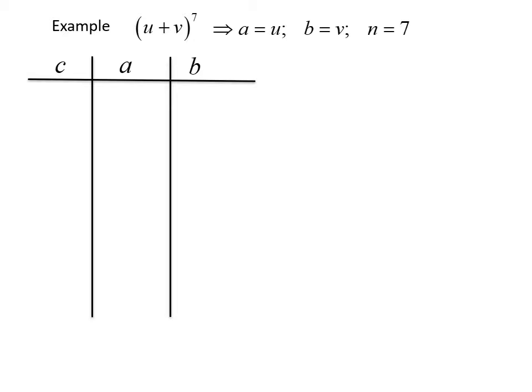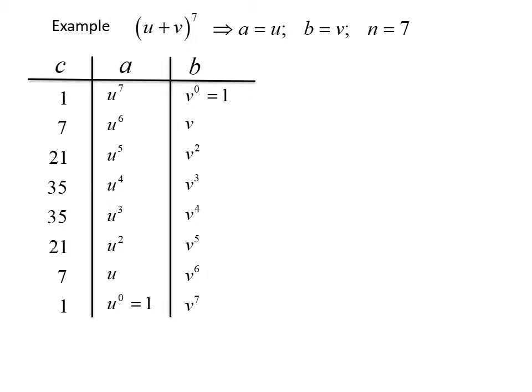If you've completed Pascal's triangle for n equals 7, your coefficients should be 1, 7, 21, 35, 35, 21, 7, and 1. Our first term a equals u, starting with the full power of 7 and decreasing: u to the seventh, u to the sixth, u to the fifth, u to the fourth, u cubed, u squared, u, and u to the zero which equals 1. Then our b term is v, starting with the power of 0 and increasing: v to the zero is 1, then v, v squared, v cubed, v to the fourth, v to the fifth, v to the sixth, and v to the seventh.